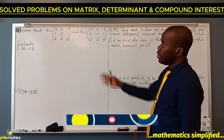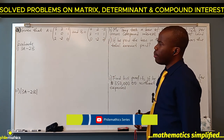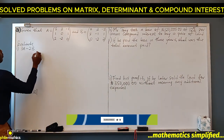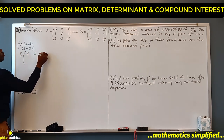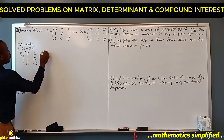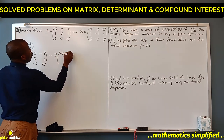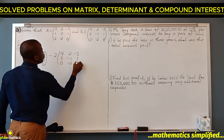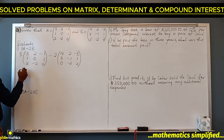Given that A is this matrix and B is this 3x3 matrix, evaluate 3A minus 2B. So we have 3 times A, which is: 3, 2, -1, 1, 0, 1, 2, -2, 0, minus 2 times B, which is: -2, 4, 2, -3, 3, -1, 1, 0, -2, 2. This 3 has to multiply every entry inside.